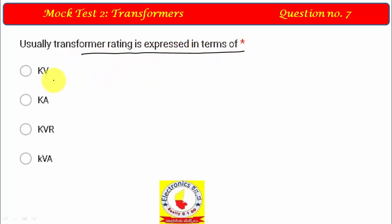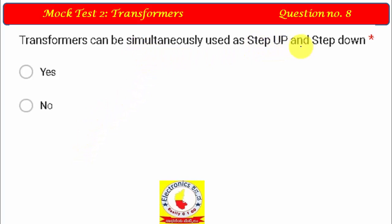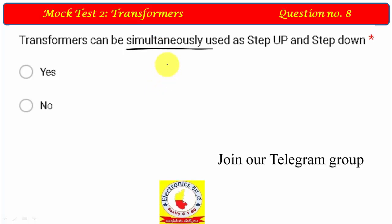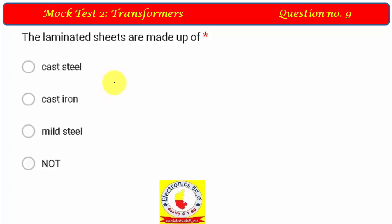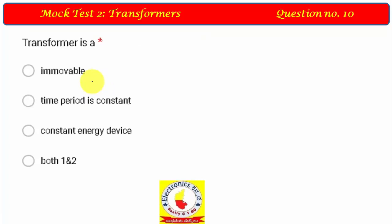Question 5: Transformer rating is expressed in KVA — kilo volt amperes. Question 6: Can a transformer be used as step-up and step-down simultaneously? No — at any given time it is either step-up or step-down, not both simultaneously, so that option is false. Question 7: Laminated sheets are made of cast steel to overcome eddy current loss.